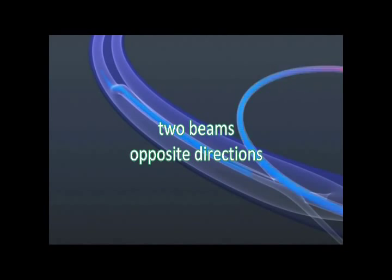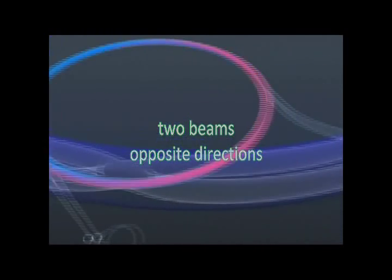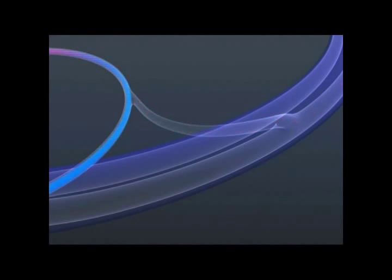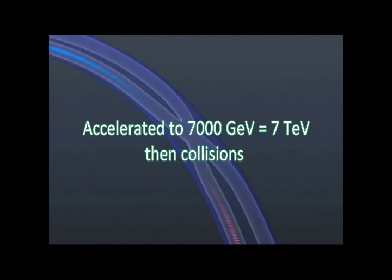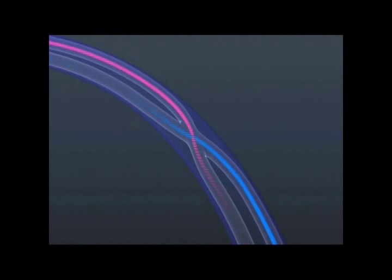One vacuum pipe has injected into it protons which will circulate clockwise, and the other protons which will circulate anticlockwise. The counter-rotating beams cross over in the four detector caverns, where they can be made of...